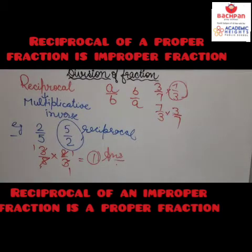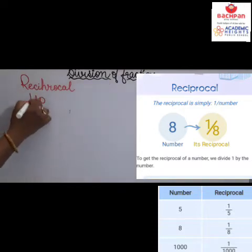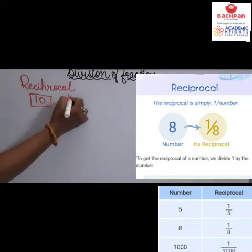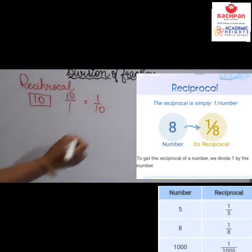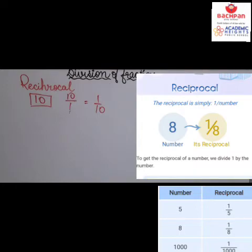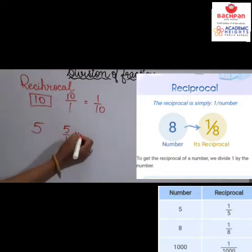Now let's talk about the reciprocal of a whole number. To find the reciprocal of 10, write it as 10 upon 1, so its reciprocal is 1 upon 10. Similarly, the reciprocal of 5 is 1 upon 5.